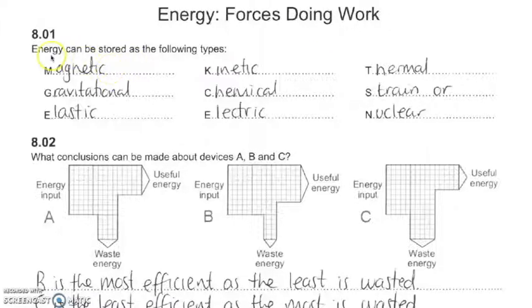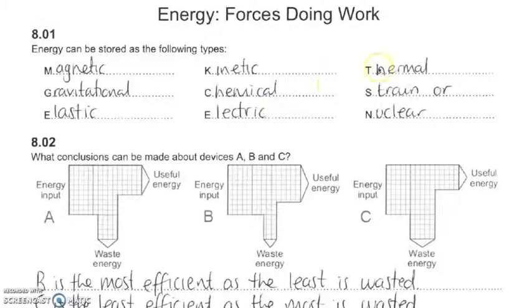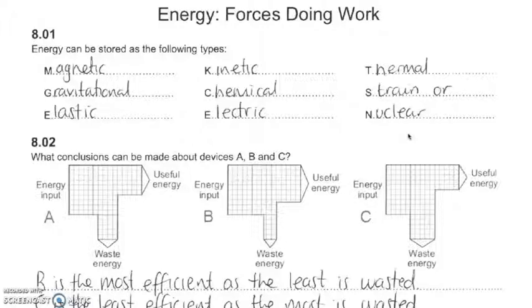Energy can be stored in the following types: magnetic, gravitational, kinetic, chemical, electrical, thermal, elastic or strain, and nuclear. We talked about these types of energy stores in one of our previous topics, so please look over that lesson.